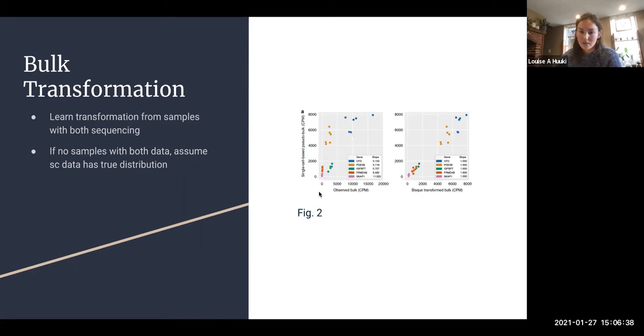The assumed bulk observed bulk counts per million is along the x-axis and the single cell counts for bulk is on the y. We see there's some correlation but it falls off a nice correlation line. Then after they use their transformation method we get a nice one-to-one correlation, and that's the goal of that step of the method.